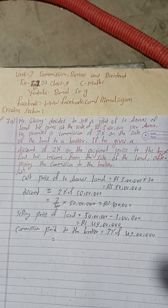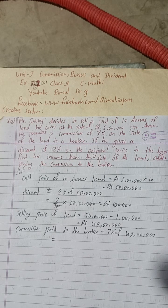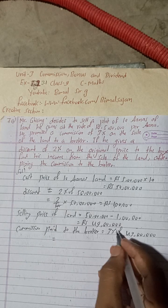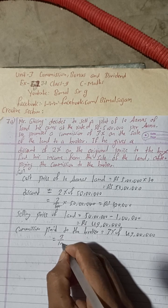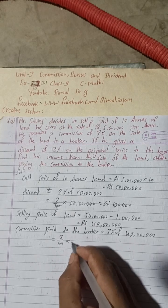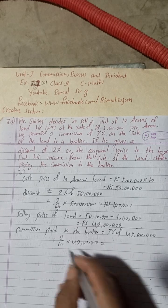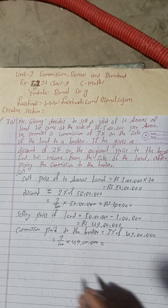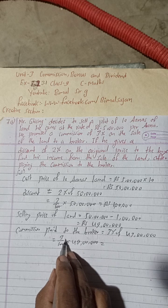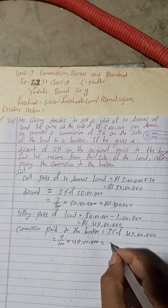So 3%. Now this is here 3%, means 3 divide 100 into 49 lakh. So this 2 zero cancel, 2 zero cancel. When you multiply 49 into, 49 into 3, we will get 147.